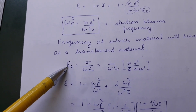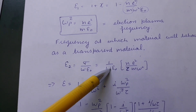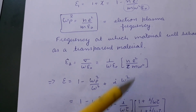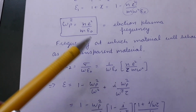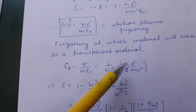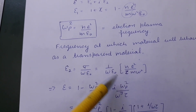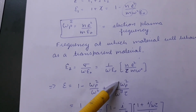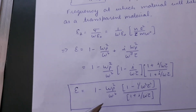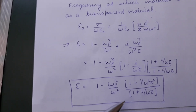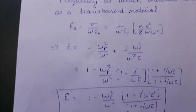The imaginary part is ωₚ² divided by ω³ times τ, where ne²/(mε₀) is accounted for by the plasma frequency. After this calculation, we arrive at the full expression for permittivity.